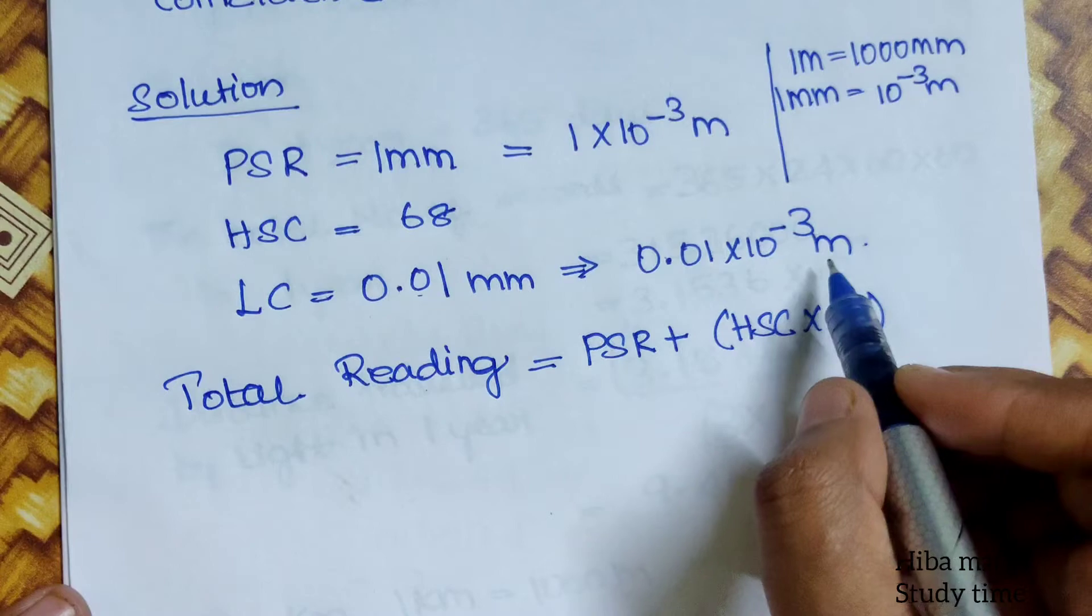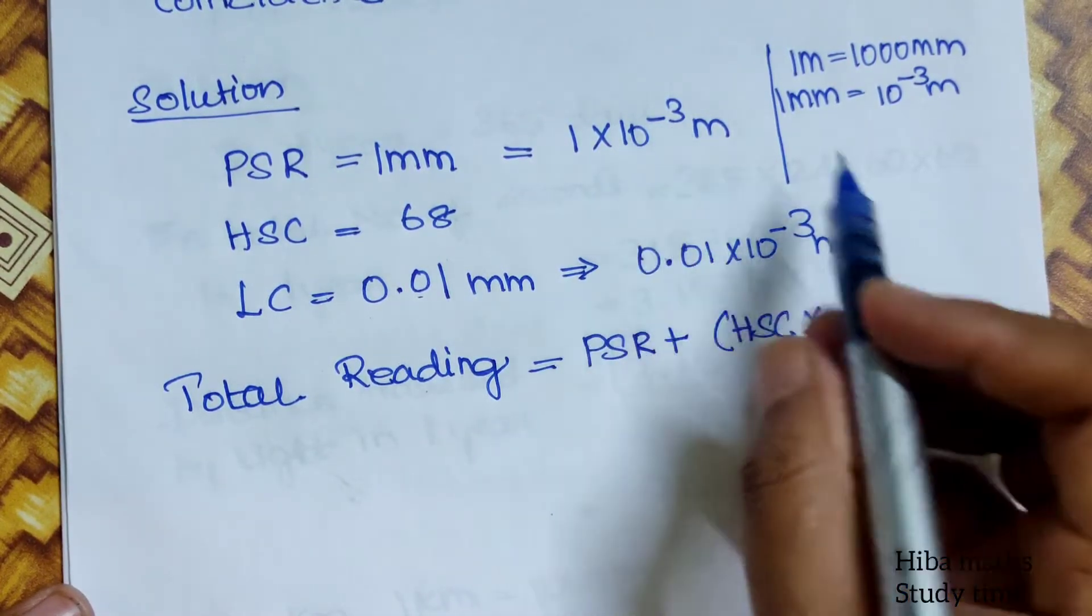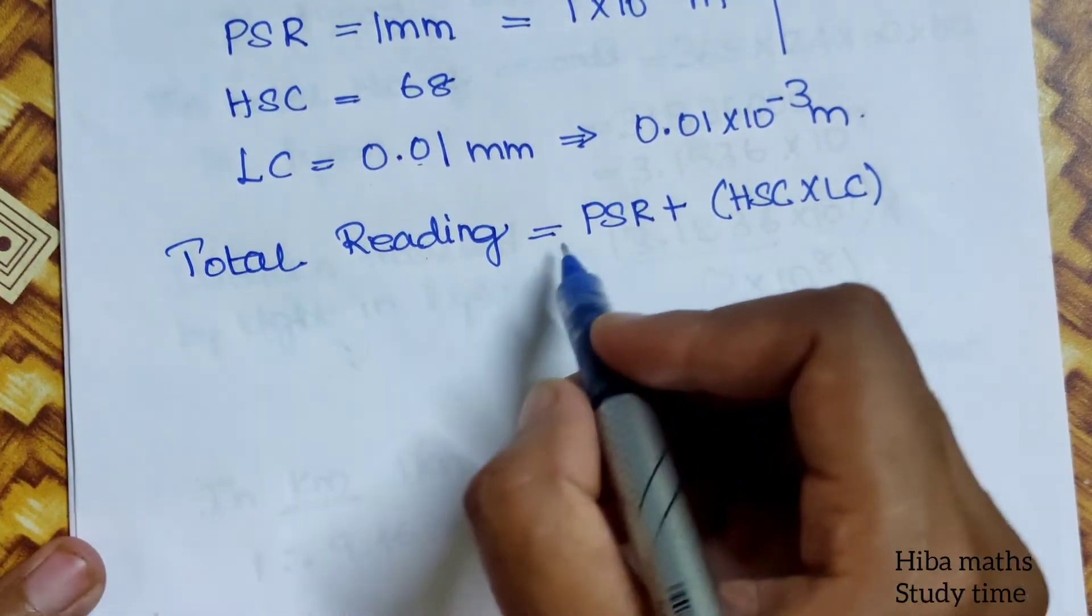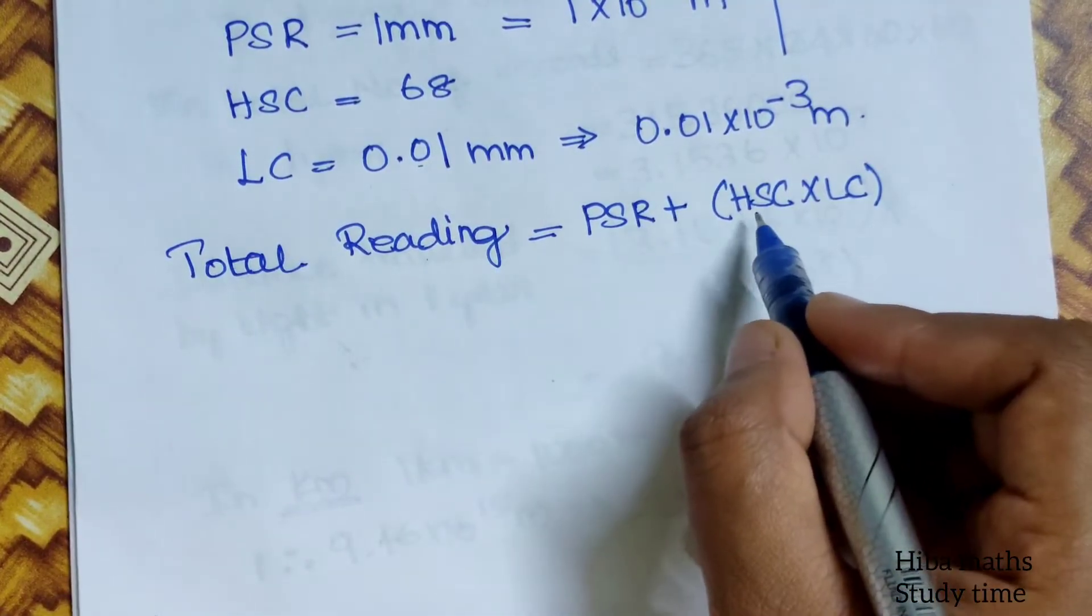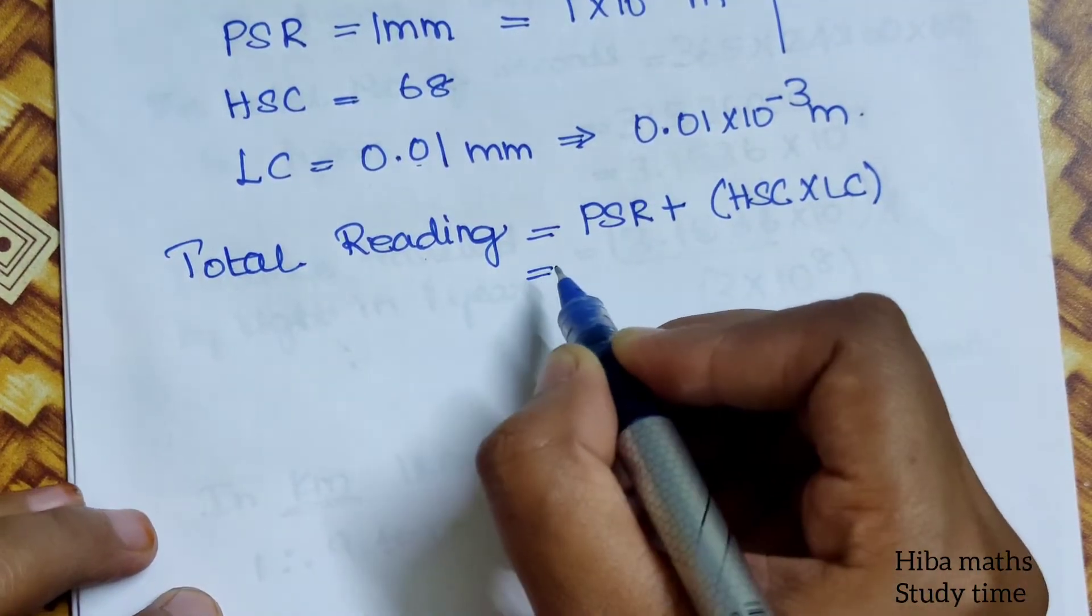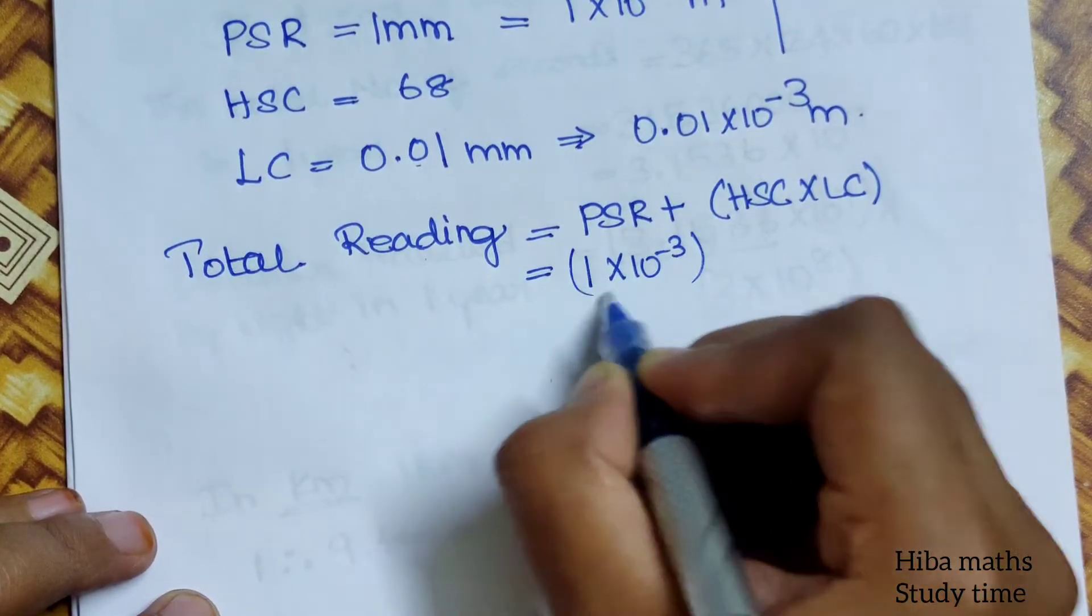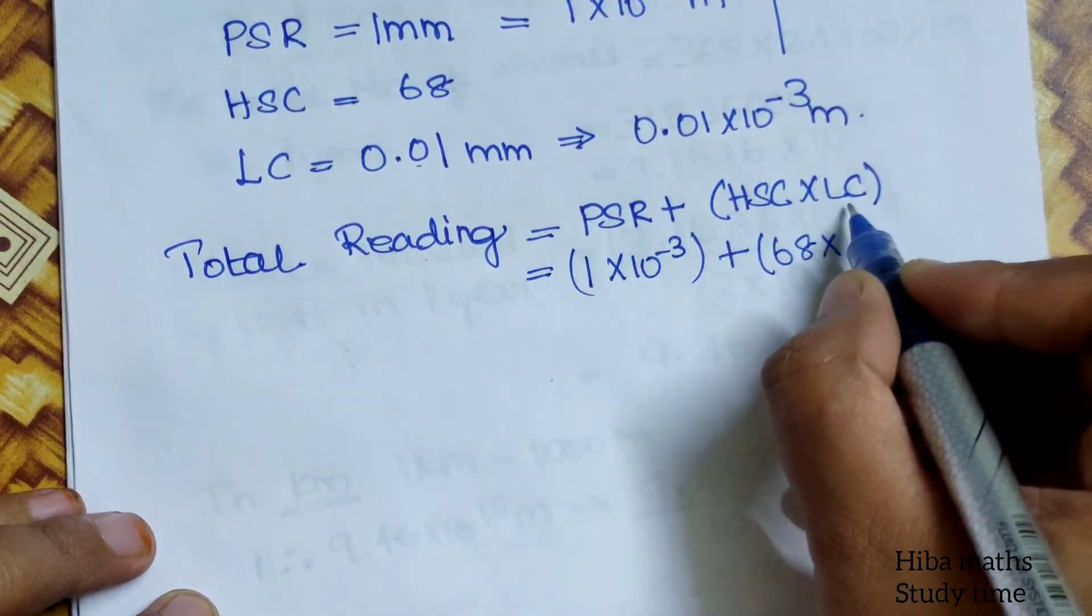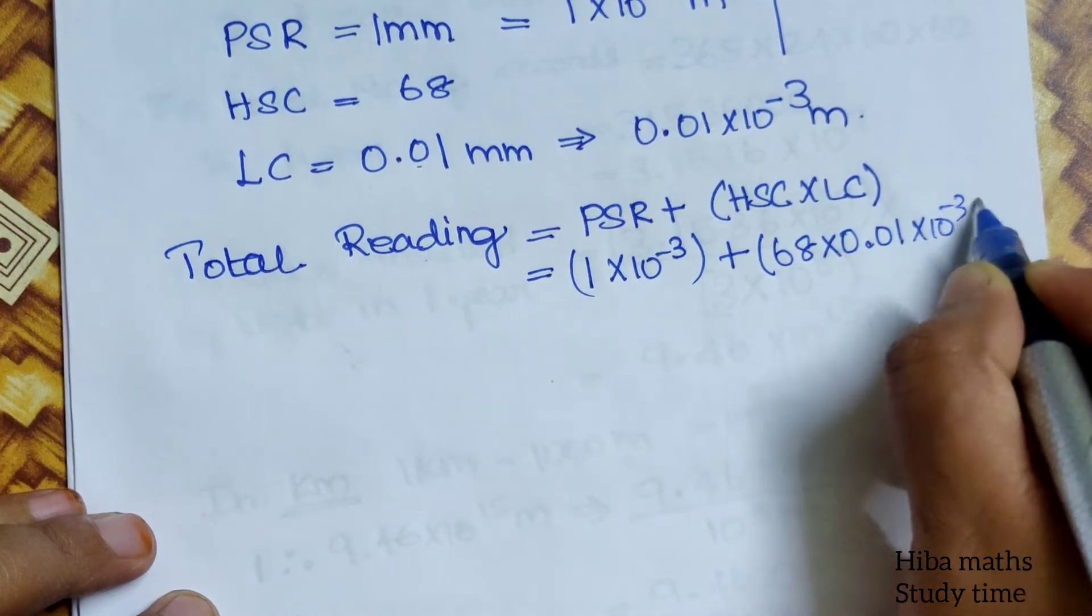And LC is 0.01 mm. This is the mm. What do you do? It is 10 power minus 3. It is 10 power minus 3. Now, total reading is the formula. Total reading is the formula. PSR plus HSC into LC. So substitute the PSR value is 1 into 10 power minus 3. You can see the plus. HSC is 68 into LC, 0.01 into 10 power minus 3.